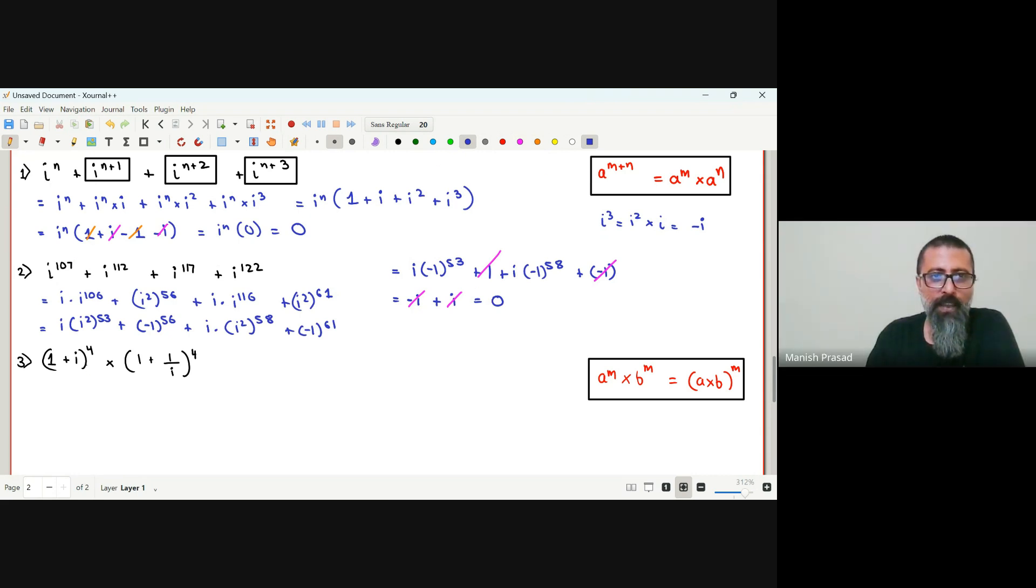Ab yeh wala dekhte hai. The first step is we need to rationalize the denominator. Aur abhi tak ham ne do teen question kar chuke hai rationalizing ka. So we know that this will come as negative i. Rough me kharke dikhata hoon ek bar phir se. One over i hai. Rationalize i over i, so upar i, niche i square. I square is negative 1, so negative i.